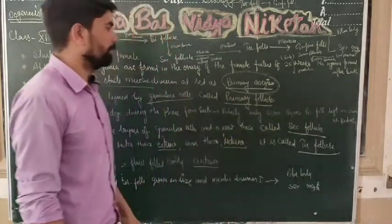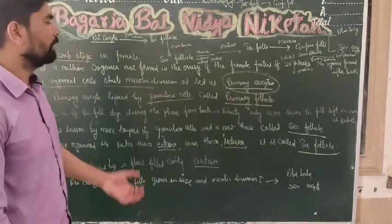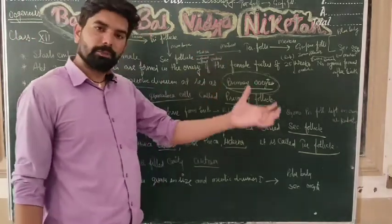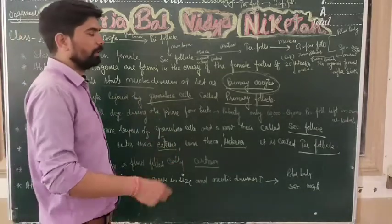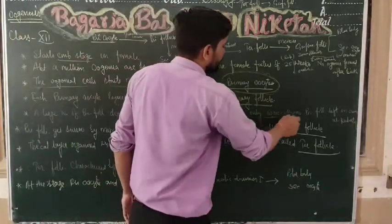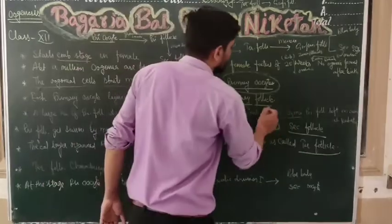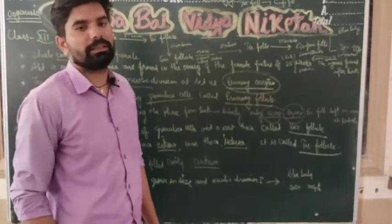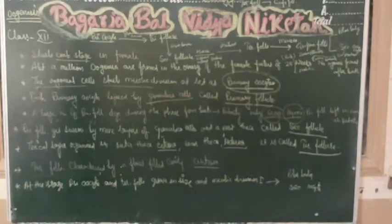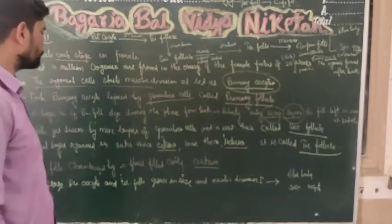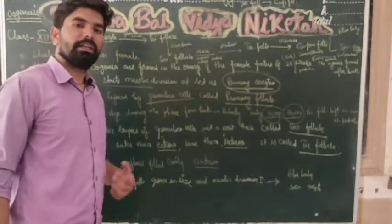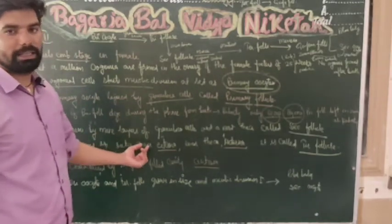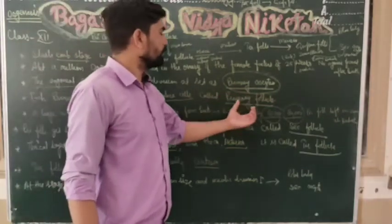At puberty, many primary follicles degenerate, leaving about 60,000 to 80,000 primary follicles in each ovary. The primary follicles then get surrounded by more granulosa cells, forming the secondary follicle.